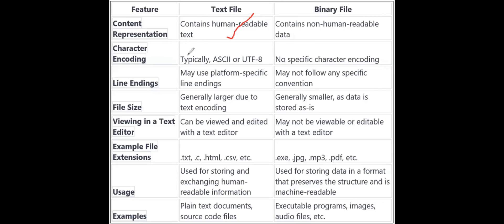Next is character encoding. In a text file, each and every character is represented as an ASCII character code or UTF-8 character code. In binary, there is no specific character encoding.